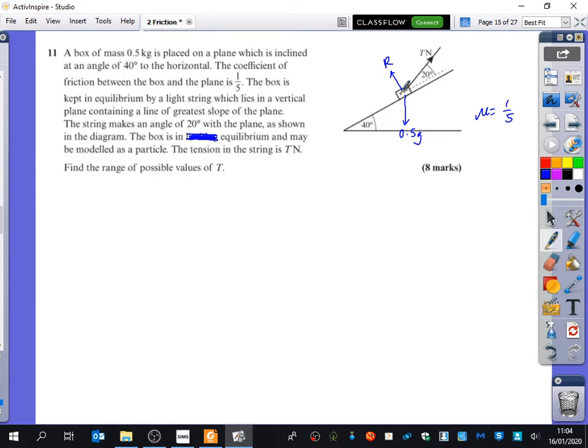So we're trying to say what's the biggest that you can pull it so that it is just about to move up, so it's in limiting equilibrium moving up. But what's the other way that it could still be in equilibrium if you weren't pulling it really hard? If you were kind of like holding it in place, let's say you're really weak and it's about to start slipping down the plane. And if you reduced how much you were pulling it up by any more, it's going to start slipping down the plane.